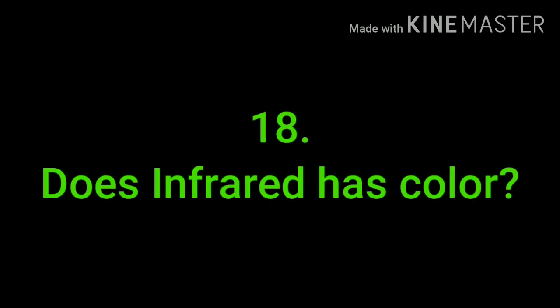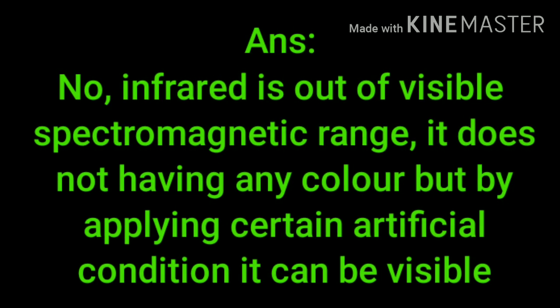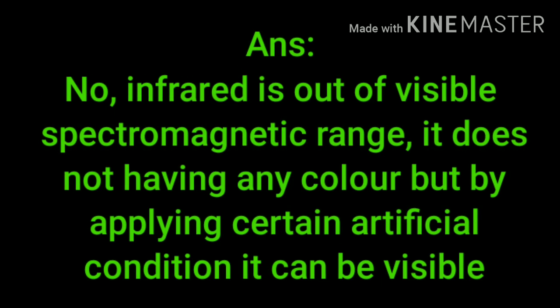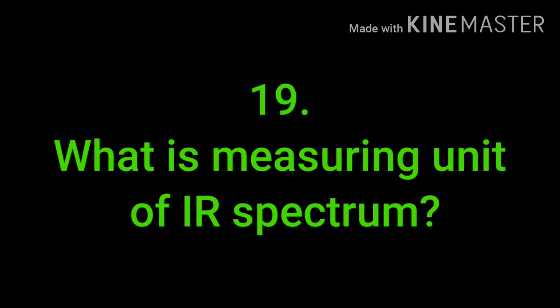Does infrared have a color? The answer is no. Infrared is outside the visible electromagnetic range, so it does not have any color. However, by applying certain artificial conditions it can be made visible — the best example is a TV remote: if you point it in front of a camera, it can blink.